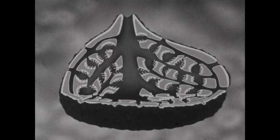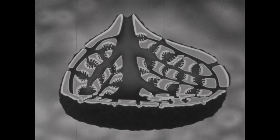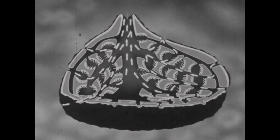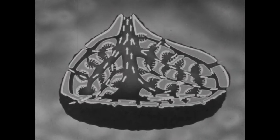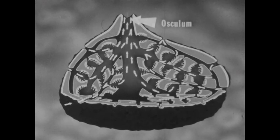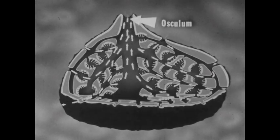When the moving flagella of the collar cells of the inner layer create a current, water is drawn through the pores, through the canals, and into the gastral cavity. The water is forced out through the osculum, the opening at the top of the sponge. Releasing a few drops of dye shows us how the sponge draws in food particles and oxygen that are in the water. Waste products are expelled through the top.